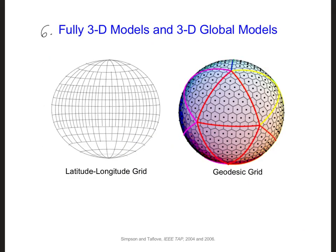Number six and lastly, we will need a 3D FDTD model if we ever want to account for day-night transitions. So along a propagation path, if we have a daytime ionosphere here and then some transition and then a nighttime ionosphere, to accurately account for this, especially over long propagation distances, a fully 3D model will be needed.